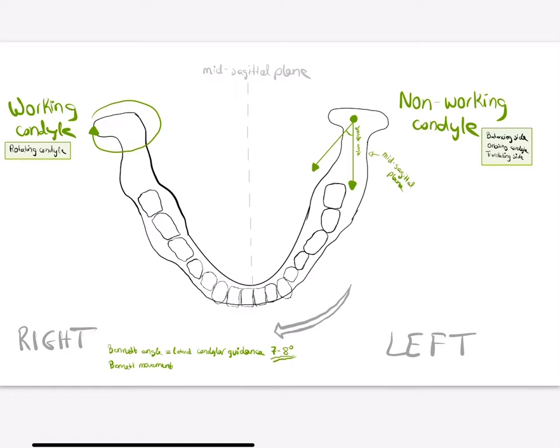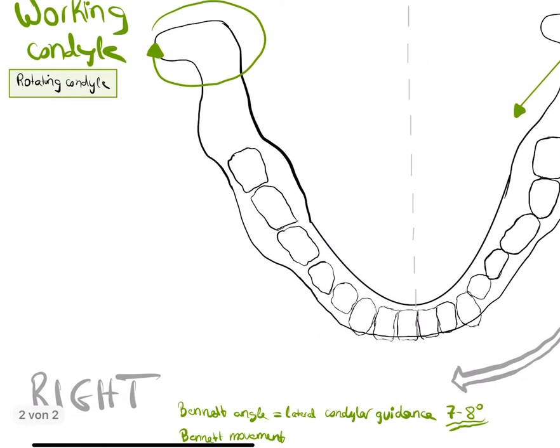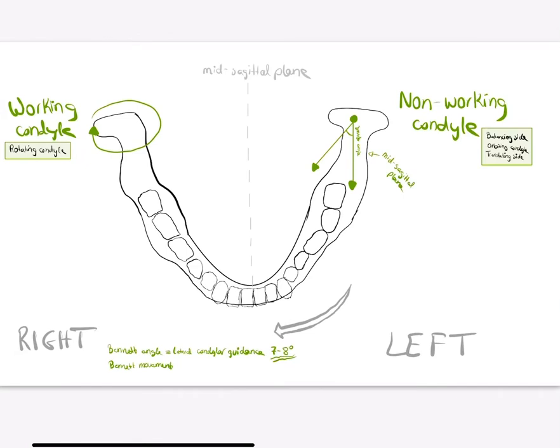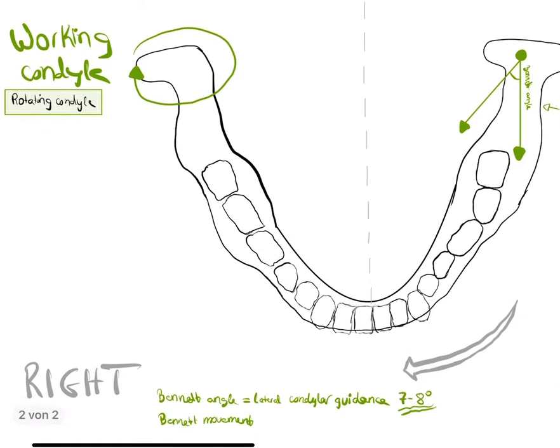The working condyle is the side to which the mandible moves, and the non-working condyle is the opposite side. This working condyle is also called the rotating condyle.